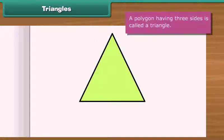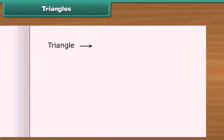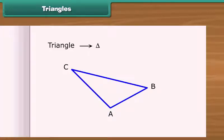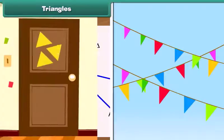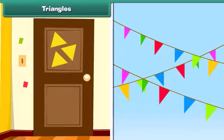A polygon having three sides is called a triangle. It has three vertices and three angles. Triangle is denoted by the given symbol. This is triangle ABC. It can also be named as triangle BCA or triangle CAB. Friends, can you recall some figures which are triangular in shape? Notice the flags in the ground and the design at the top. These are triangles.